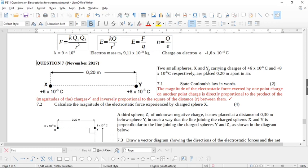Two small spheres x and y carrying charges of +6 × 10⁻⁶ Coulombs and +8 × 10⁻⁶ Coulombs respectively are placed 0.2 meters apart in air. State Coulomb's law in words.